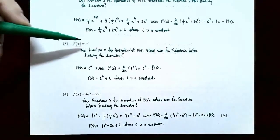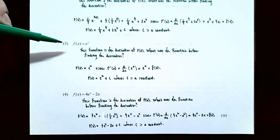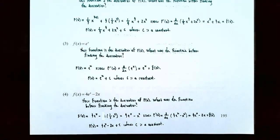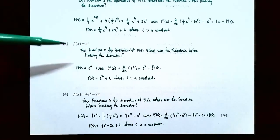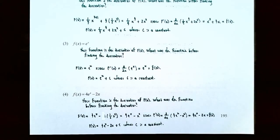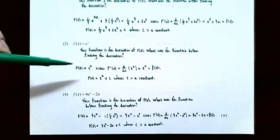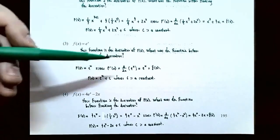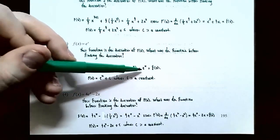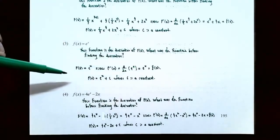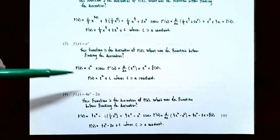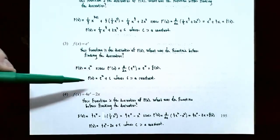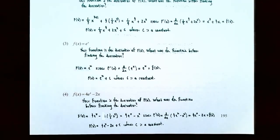Number three, f of x is equal to e to the x. This function is an exponential function with base e. The derivative of e to the x is itself, e to the x. So the antiderivative of e to the x is also e to the x. Capital F of x equals e to the x, and the family of antiderivatives is capital F of x equals e to the x plus c, where c is a constant.